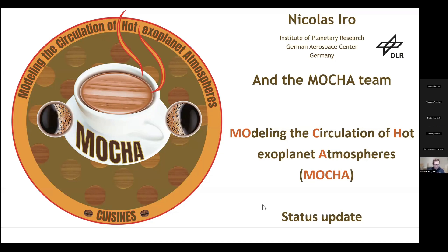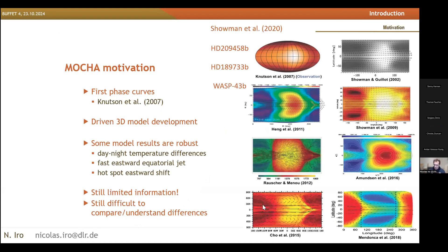As Duncan said, there are a lot of similarities with Camembert, but we just have different objects. I will go quickly into the introduction because I kind of said that already when I presented the Mocha. For hot and ultra-hot Jupiters, we have a lot of non-dimensional information with phase curves and limb asymmetry measurements, so it really makes sense to have 3D models to help analyze what we have.